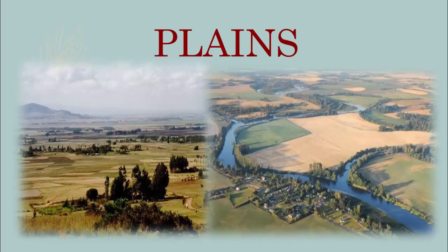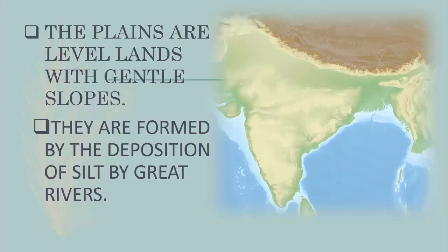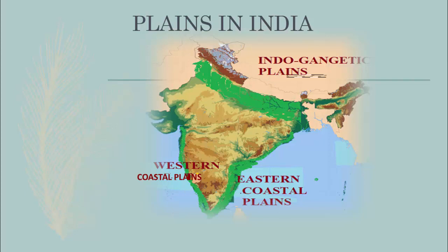Now let us know about plains. Plains are level lands with gentle slopes, and they are formed by the deposition of silt by great rivers. The important plains in India are the Indo-Gangetic Plains, Western Coastal Plains, and Eastern Coastal Plains.